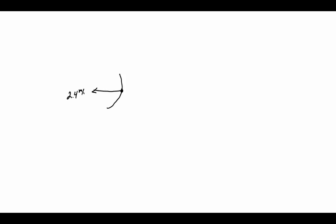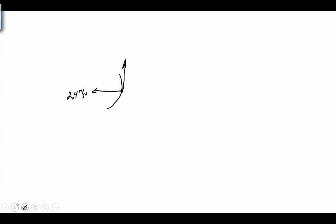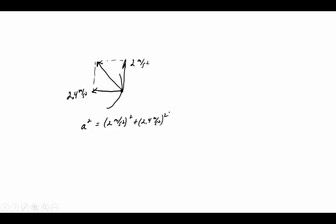The radial acceleration is 2.4 meters per second squared directed inward, and the tangential acceleration is 2 meters per second squared in the direction of motion. So acceleration squared equals 2 squared plus 2.4 squared, giving a net acceleration of 3.12 meters per second squared.